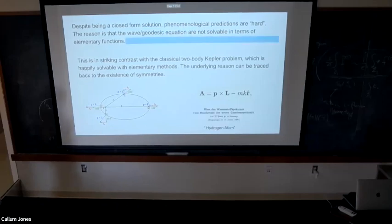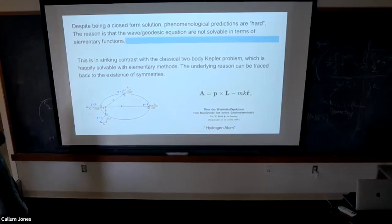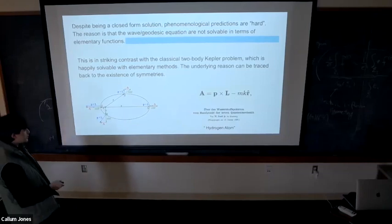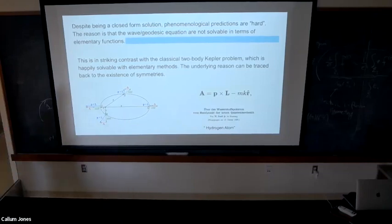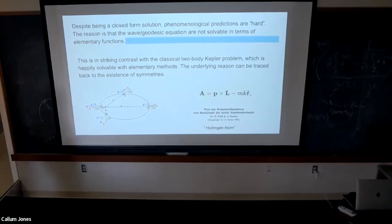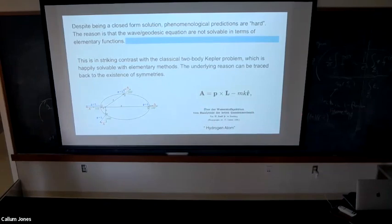This is not only a feature of the Kepler problem — it's also a feature of the hydrogen atom. The hydrogen atom quantum mechanically realizes the same symmetry, and that's the reason you can solve it with elementary methods of quantum mechanics. In fact, even in the early days of quantum mechanics, people realized this symmetry in order to compute the spectrum.